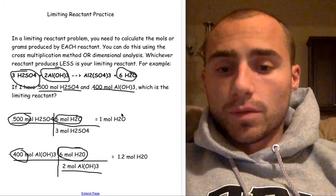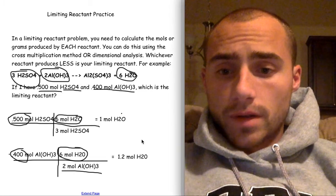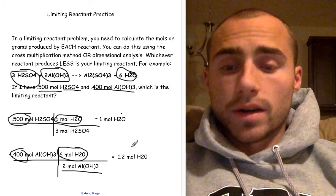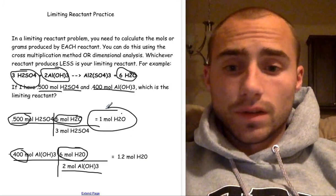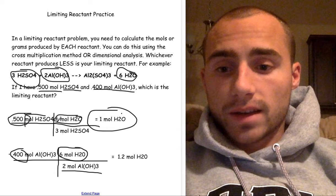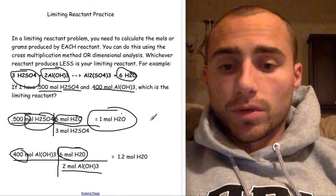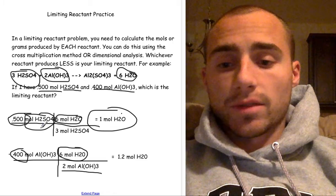And then you just multiply straight across and divide. This will produce one mole of water. And this will produce 1.2 moles of water. Whichever one is less is your limiting reactant. So that's how much it will produce. And my limiting reactant is hydrogen sulfate. It will produce one mole of water, and that is my limiting reactant.